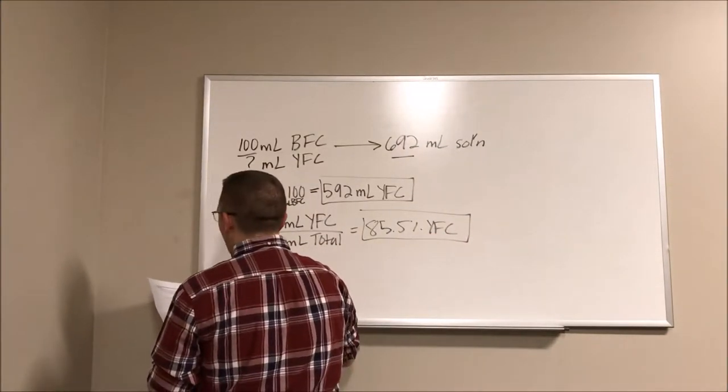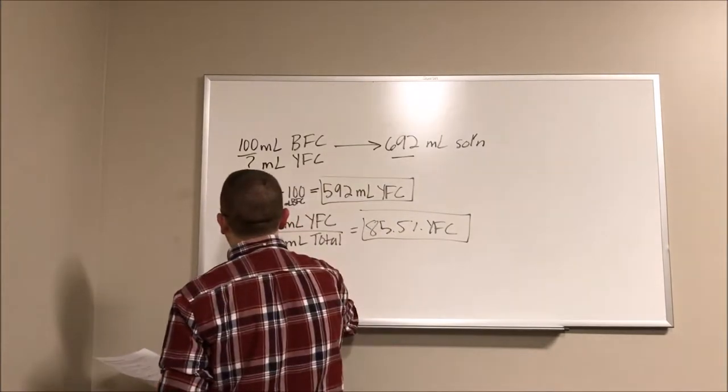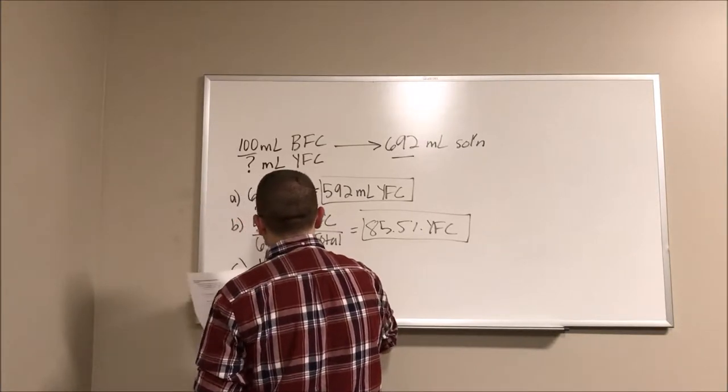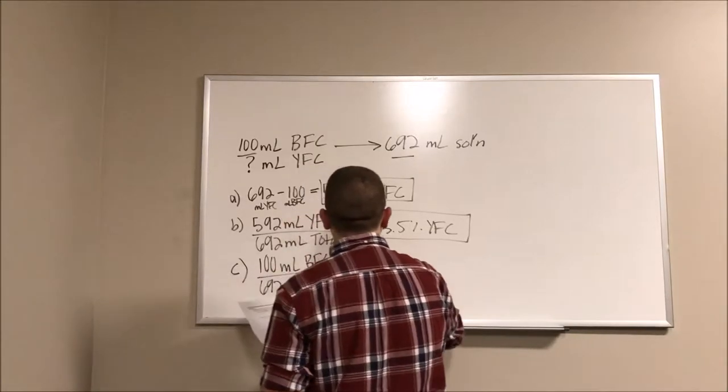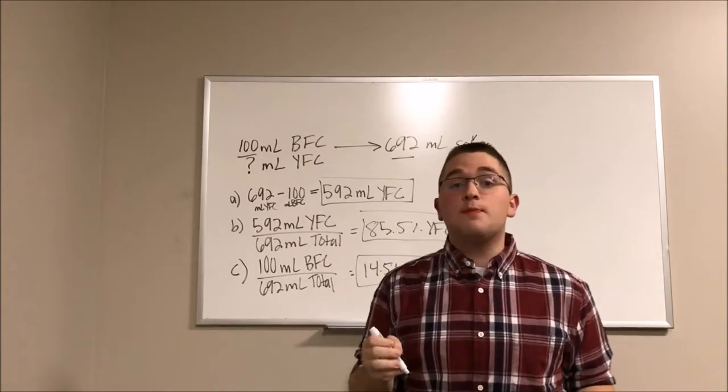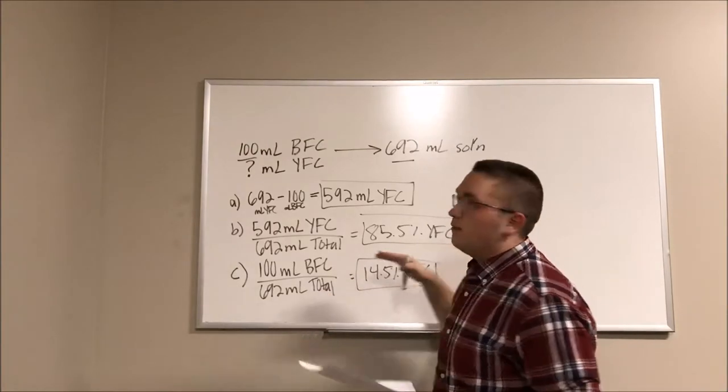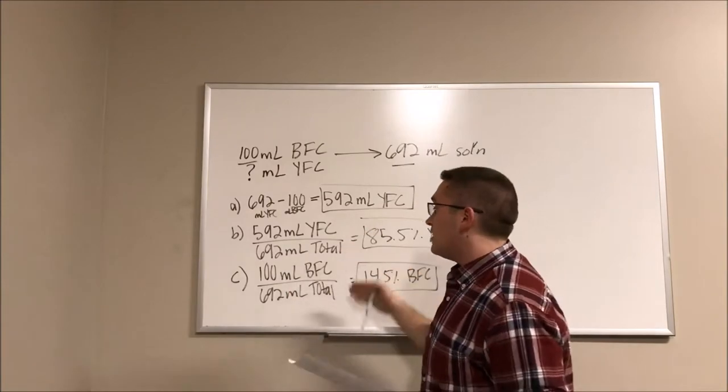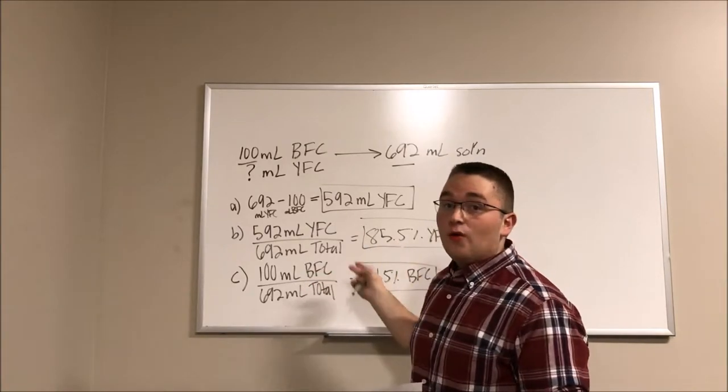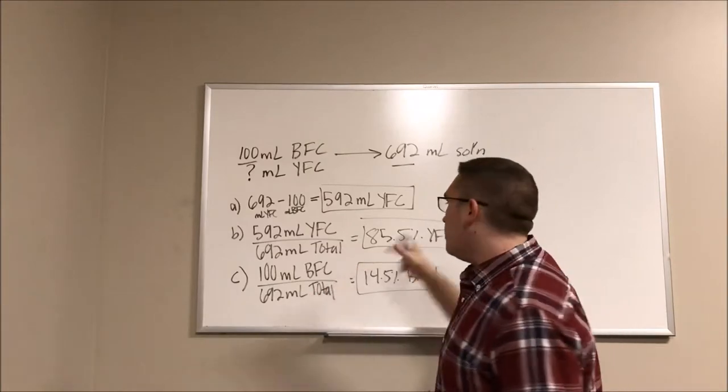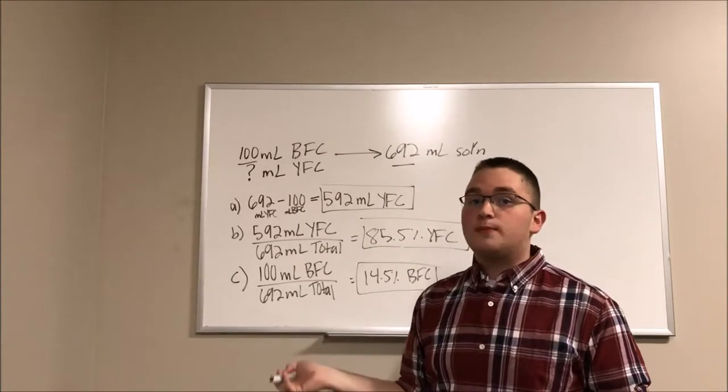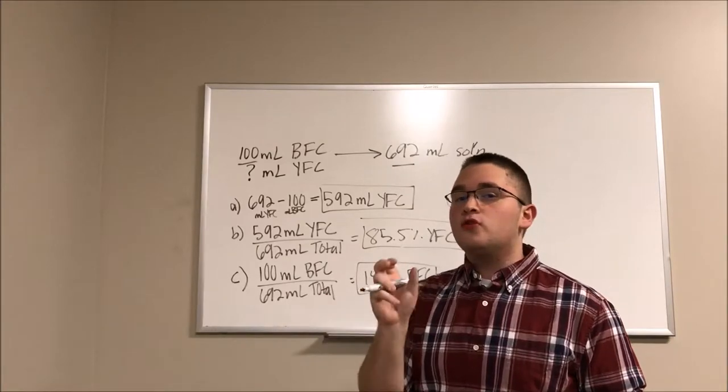Letter C, what percent of the final solution will be blue food coloring. So again, we're going to do pretty much the same thing. Take 100 of blue food coloring divided by 692 milliliters of total volume to yield 14.5% blue food coloring. Now, you're probably thinking, why did you just spend all the extra effort rewriting that equation when you could have just subtracted from 100? It's always a good habit to do as many calculations as possible to check your work. So 85.5 plus 14.5 does check and it is 100%. So we know that 100% of our solution is either going to be blue or yellow food coloring.